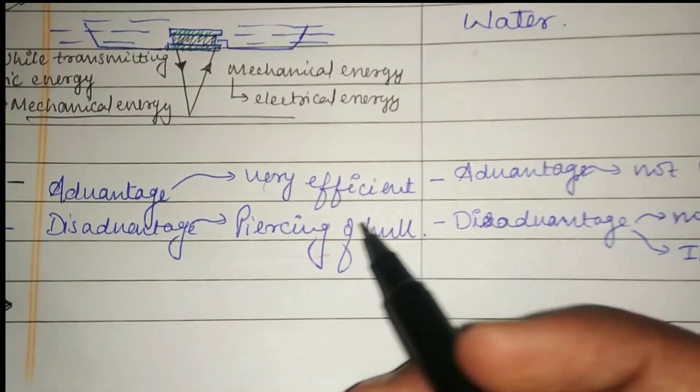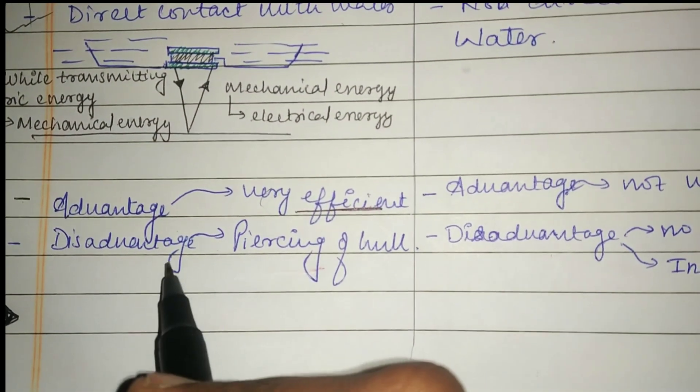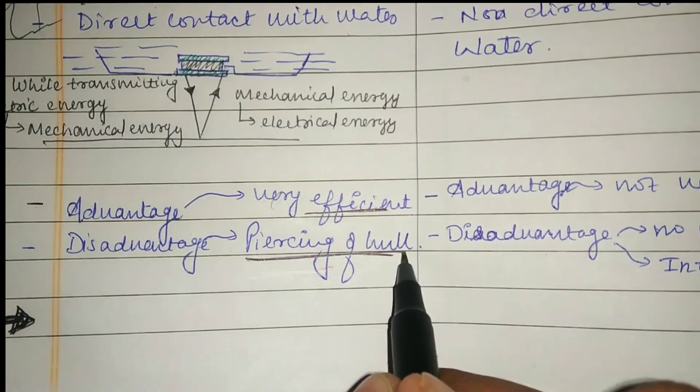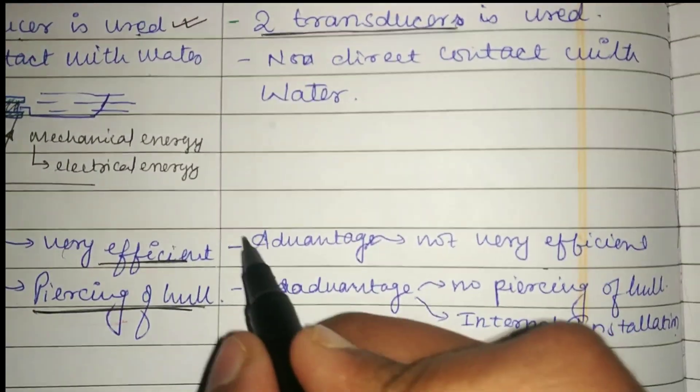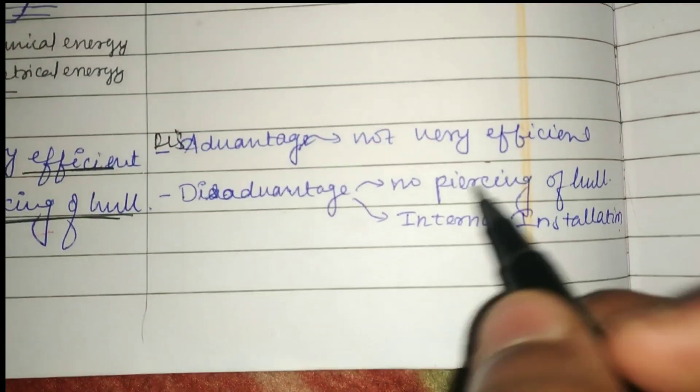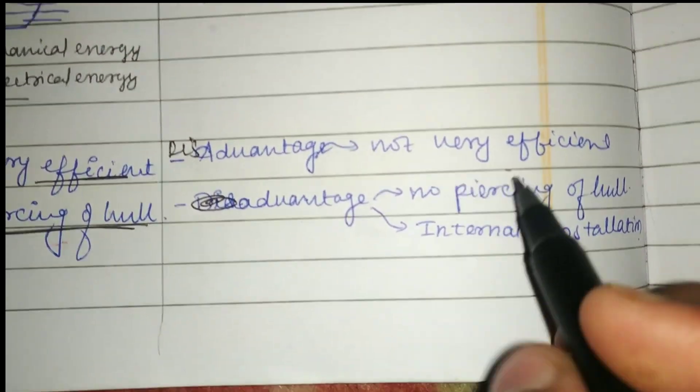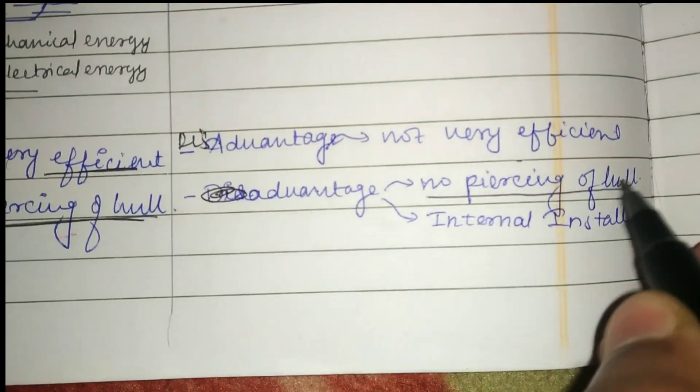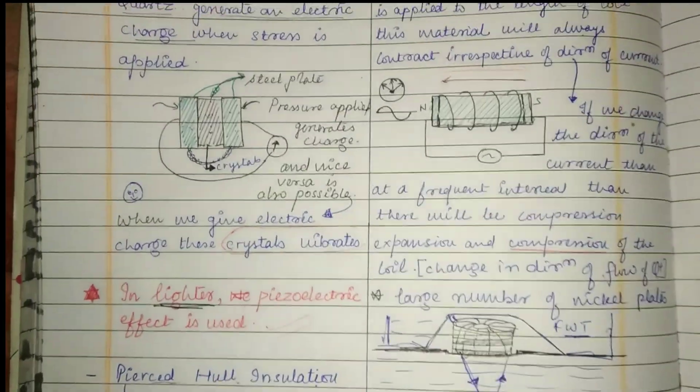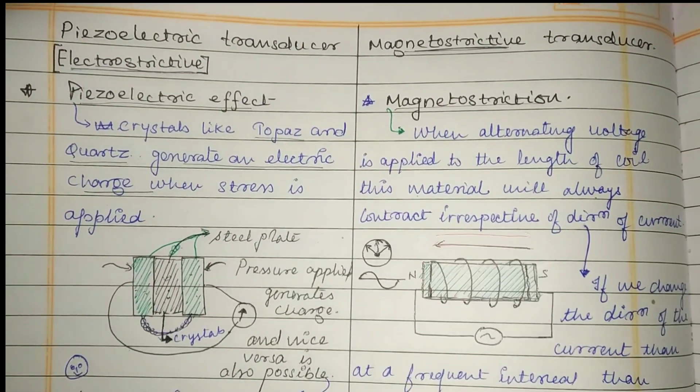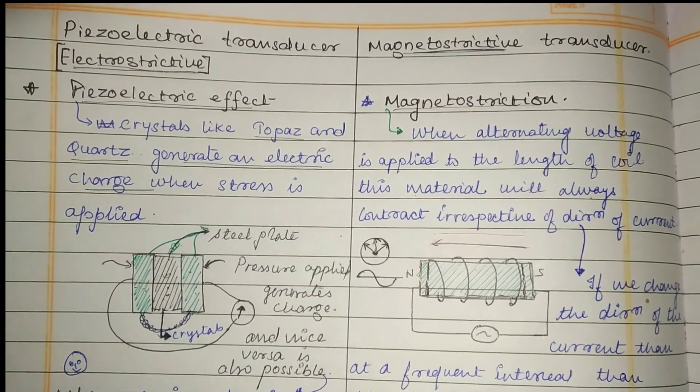The advantage of piezoelectric transducers is that they are very efficient, but the disadvantage is cutting of the hull. The disadvantage of magnetostrictive transducers is that they are not very efficient, but the advantage is no cutting of hull and internal installation. These are the basic differences between magnetostrictive and piezoelectric transducers. Thank you.